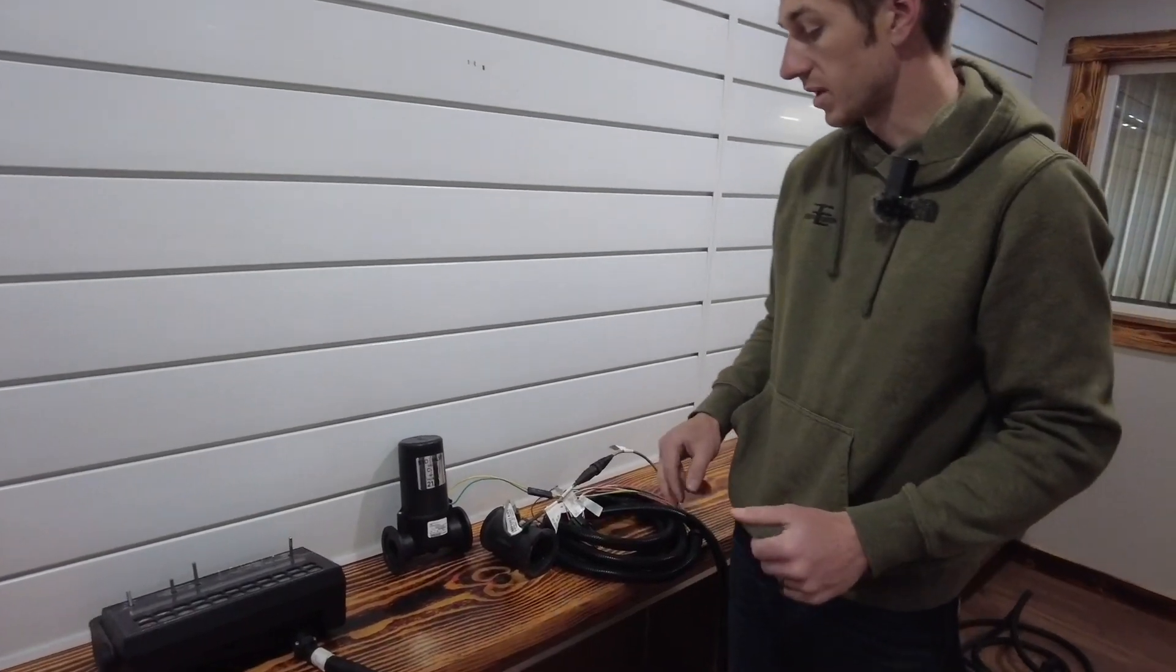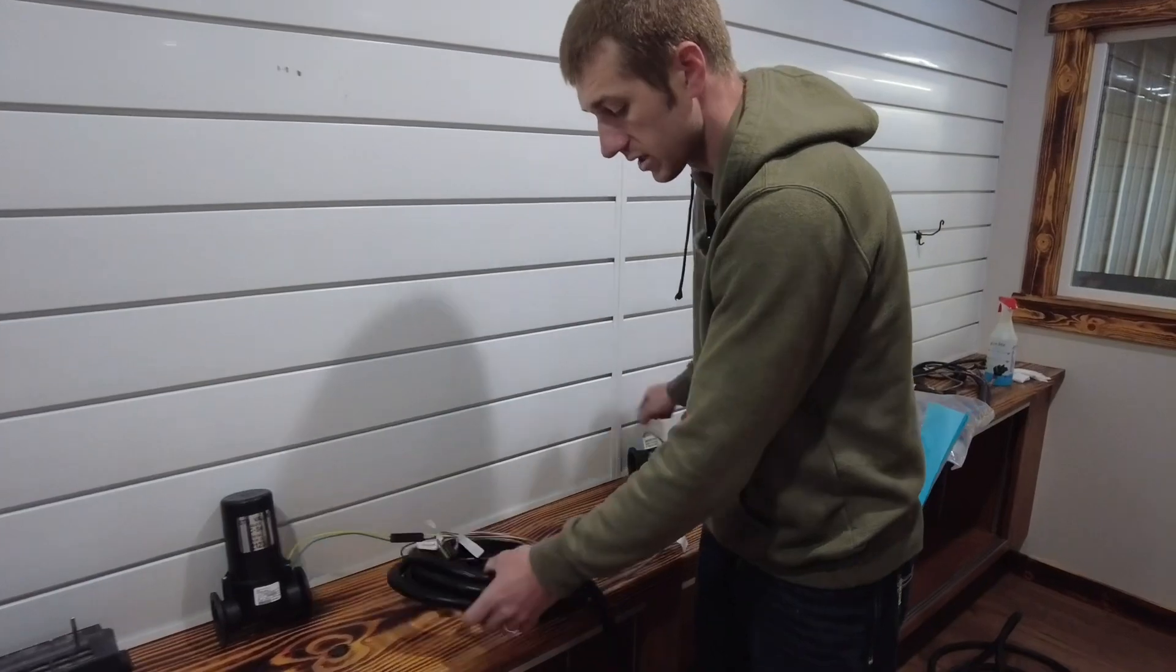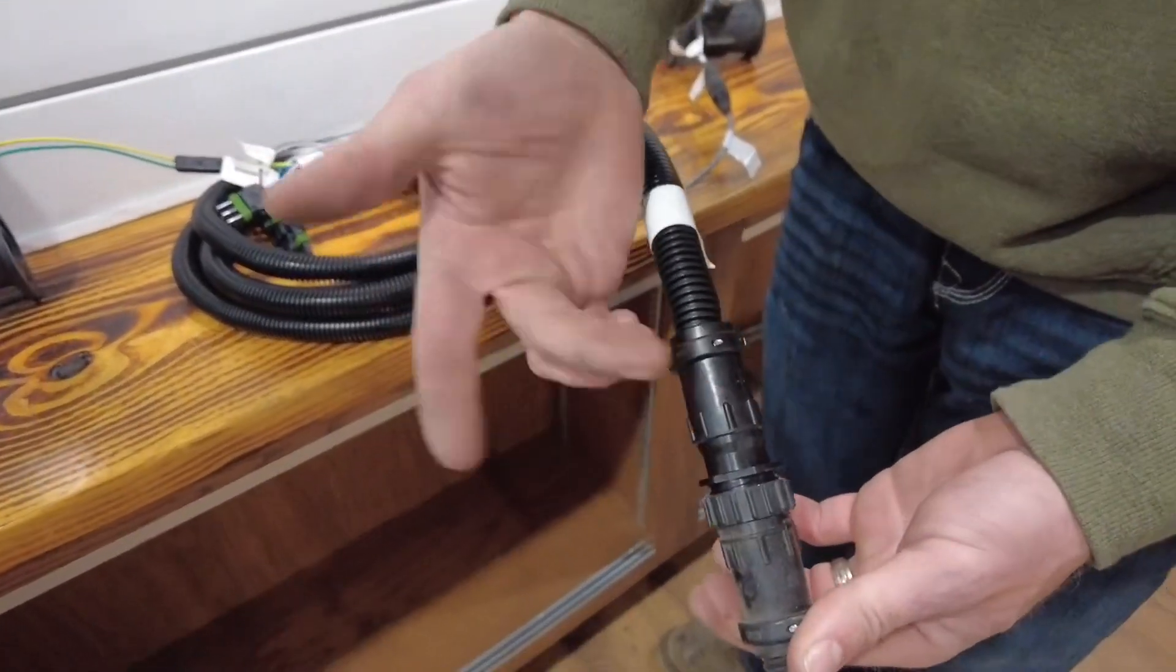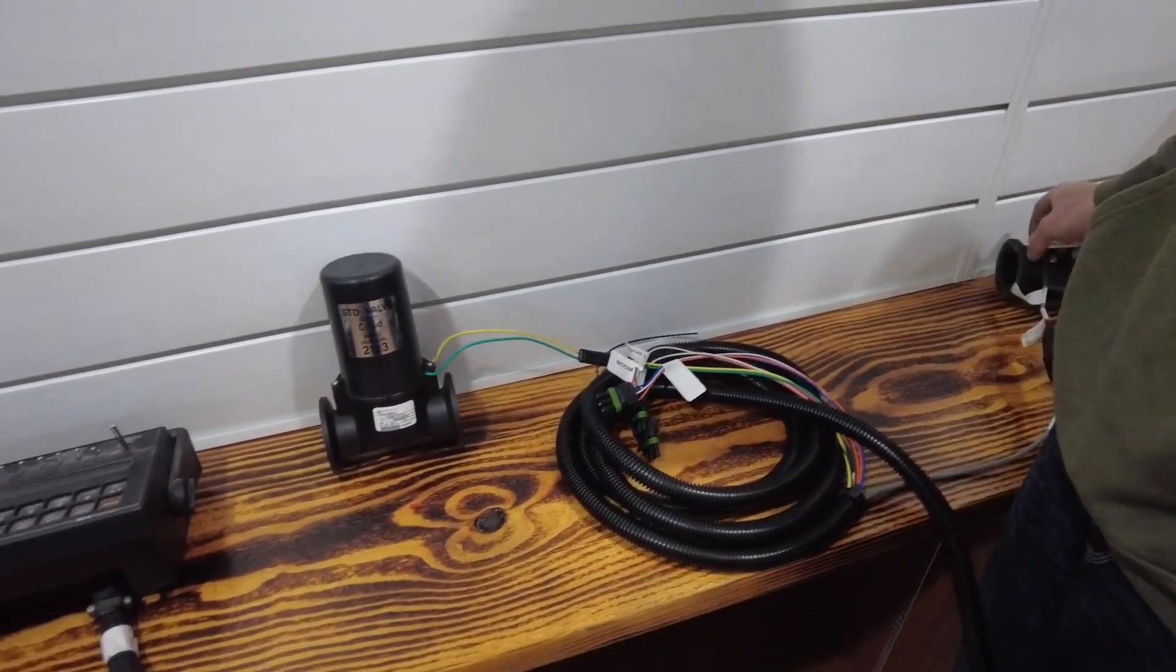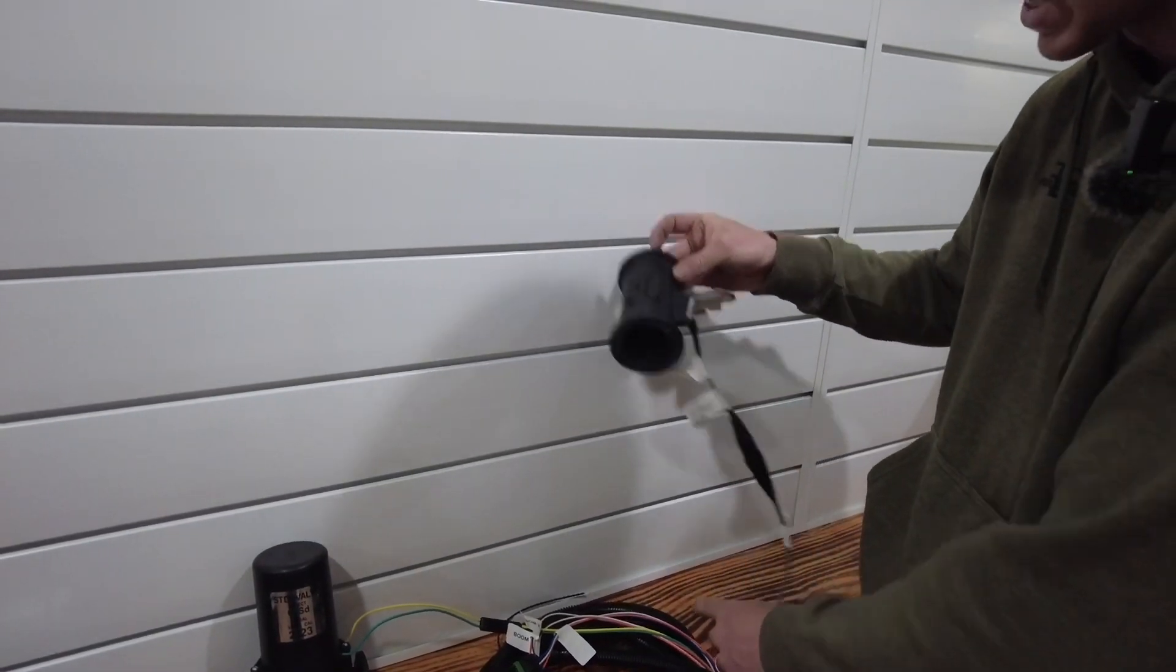I want to go through the components and how they all work. So this is our product harness. The product harness plugs into the console harness right here. The product harness is where all the magic happens. So we've got our flow meter tied into our flow meter cable.